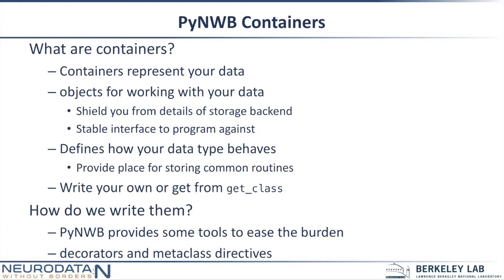The point is to provide a stable interface for you to program against. Part of this is also a way to define how your data type behaves — providing common routines for accessing or transforming data that can live on these container objects. There are two ways to get container objects: you can use the auto-generation method called get_class, which Ryan mentioned, and that works for getting started, but you may want to write your own.